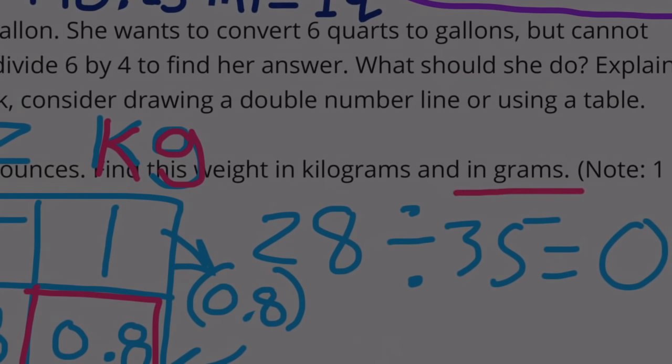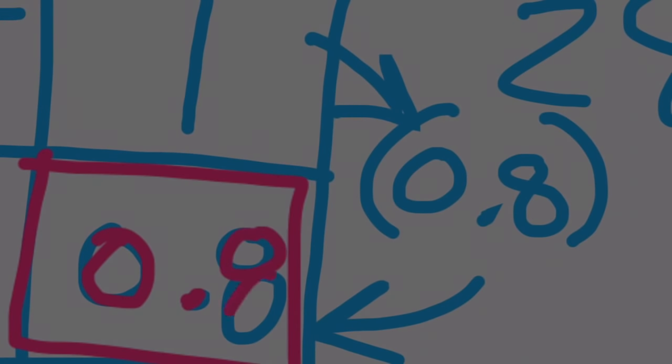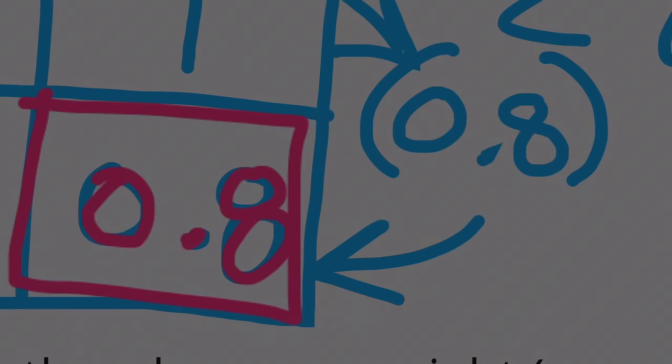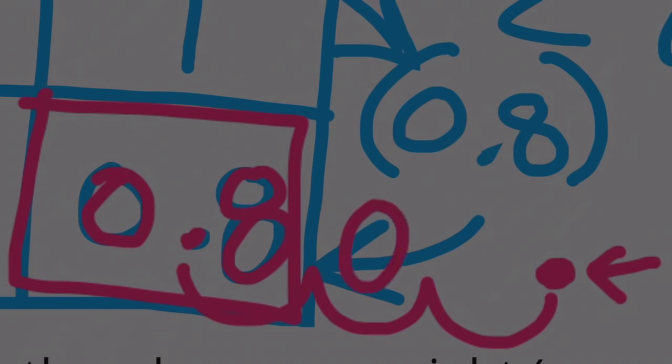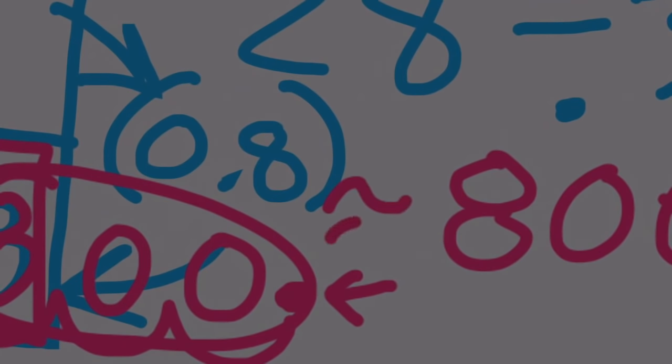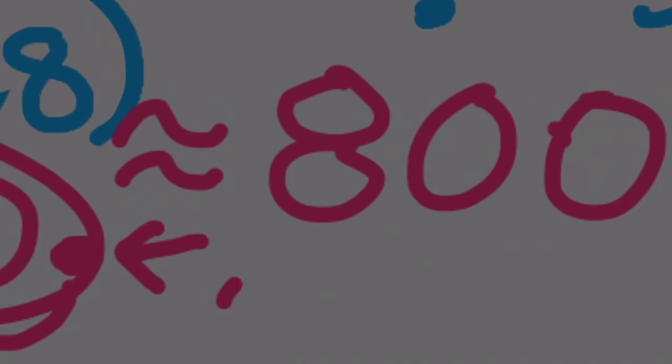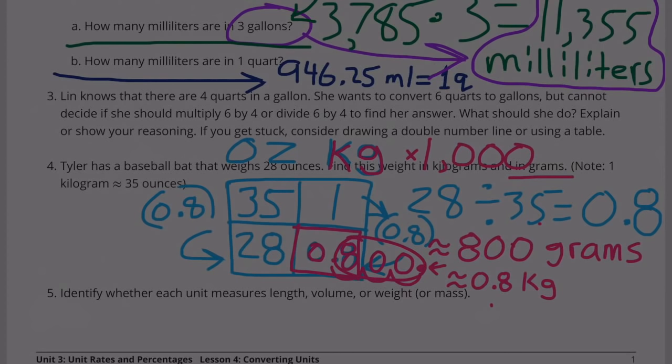But we also need to figure out the weight in grams. So we need to multiply this number right here by 1,000. One easy way to do that is to move the decimal point over 3 times. This is 10 times bigger, 100 times bigger, 1,000 times bigger. The decimal point is now over here and we fill these in with zeros. So it becomes 800. So it's actually about 800 grams and about 8 tenths of a kilogram.